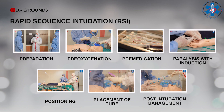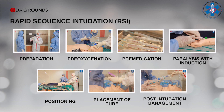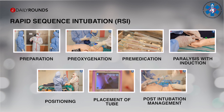Rapid sequence intubation can be divided into seven P's of RSI as we call it. It includes preparation, pre-oxygenation, pre-medication, paralysis with induction, positioning, placement of tube, and post-intubation management. Let's go through each of these steps in detail.